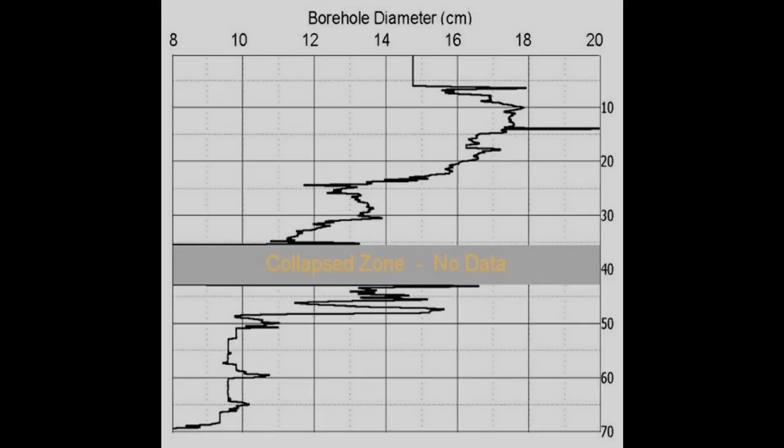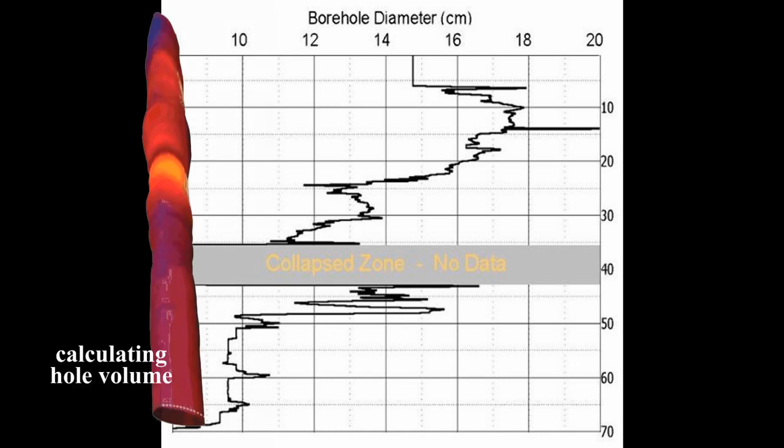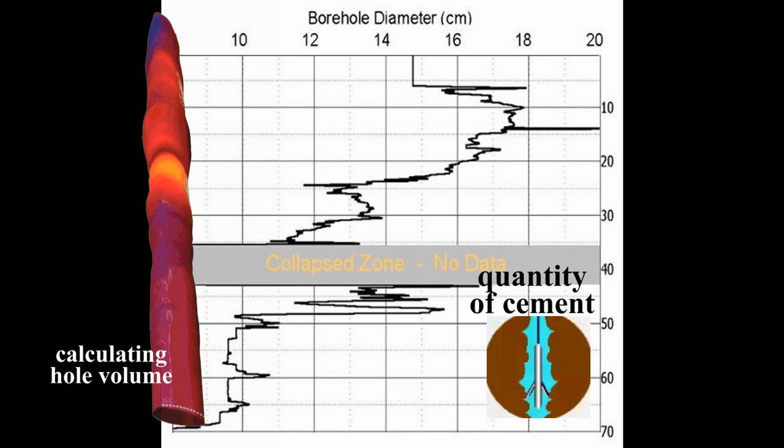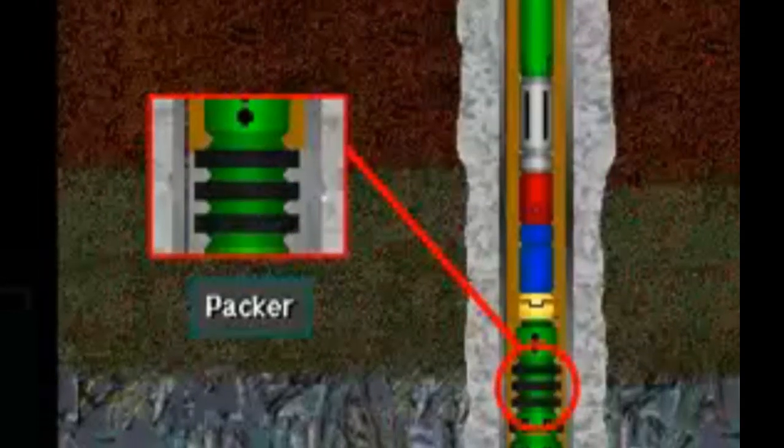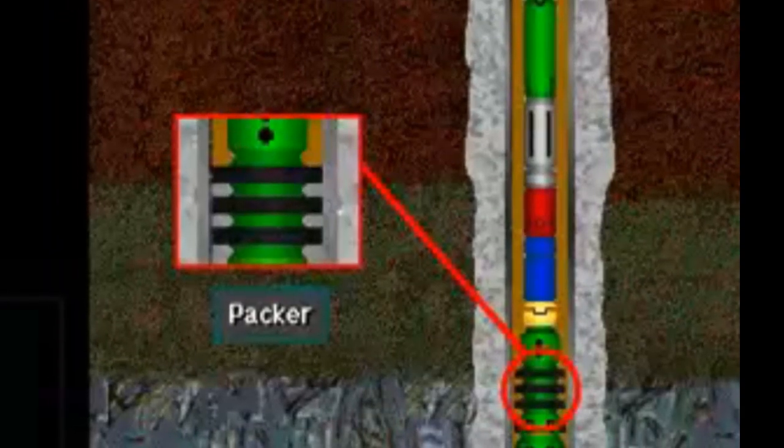In addition, the results from the caliper log can help in calculating the hole volume, which will become necessary when determining the quantity of cement needed for casing. It is also good for locating good packer seats for the DST.